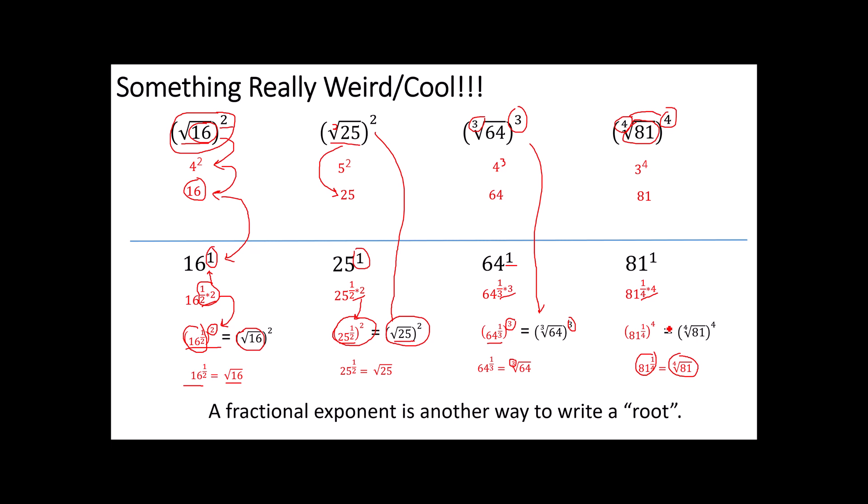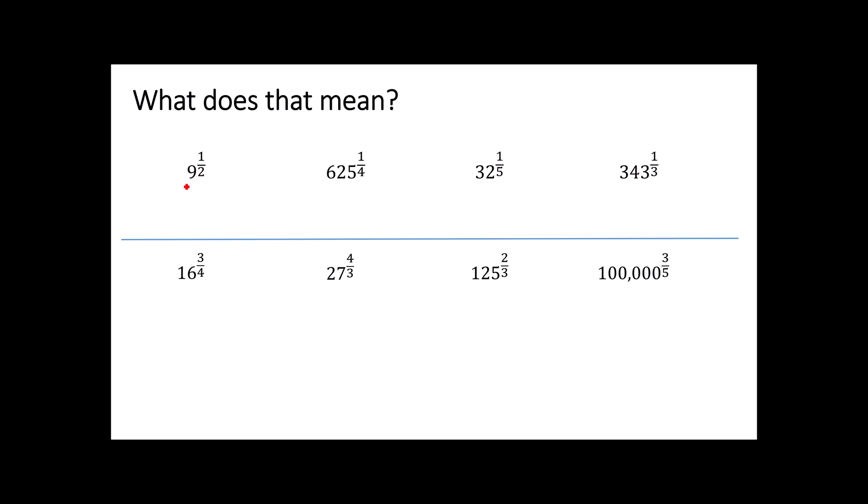Essentially, what we've just proven is that a fractional exponent is another way to write a root. Comes in really handy a little later on when we're dealing with polynomials. For now, here's all you need to know. If the problem says to you 9 to the one half you can think of that as the square root of 9 which is 3. If you see 625 to the one fourth that's just asking you what's the fourth root of 625? That's a 5. The fifth root of 32 is a 2 and the cube root of 343 is a 7. Notice here again I just listed the positive versions there are sometimes negative versions as well.